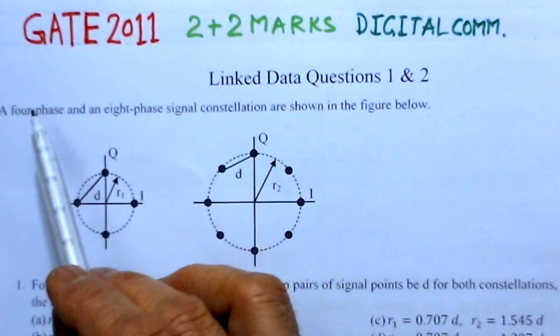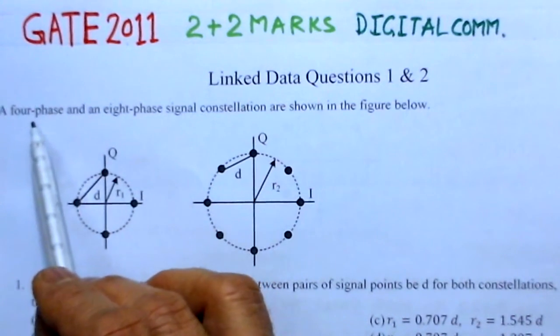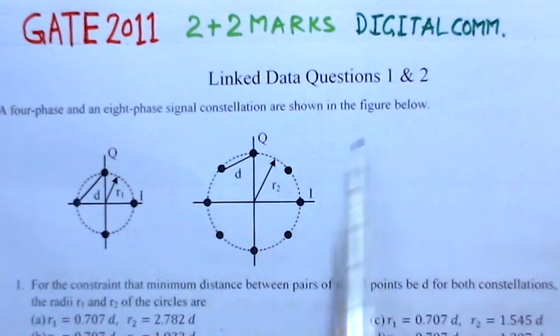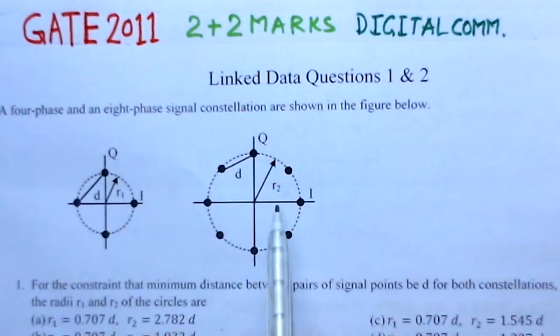First we will read out the problem and then give the solution. A 4-phase and an 8-phase signal constellation are shown in the figure. These constellations are given here - this is 4-phase and this is 8-phase.